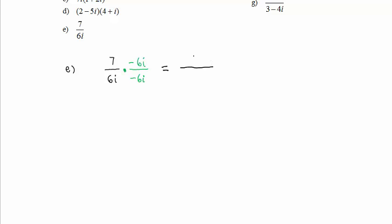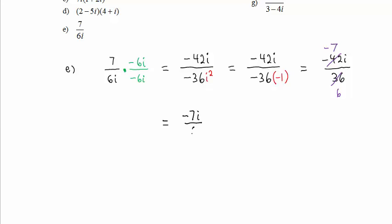In the numerator, we have negative 42i. In the denominator, we have negative 36 times i squared. And i squared is negative 1. So we have negative 42i divided by 36. And because all of the pieces here are multiplied and or divided, we can reduce. Dividing by 6 and by 6, we have negative 7i divided by 6.